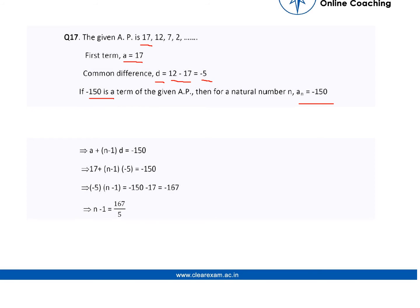The nth term of a given AP can be written as a plus n minus 1 into d equals minus 150. Now we know that a will be 17 and d will be minus 5. Substituting the values in the given equation...